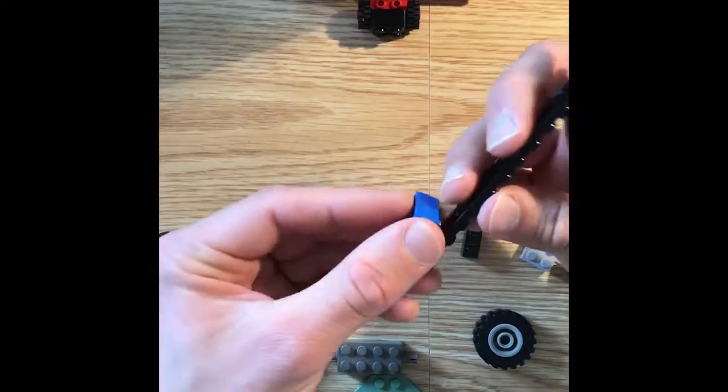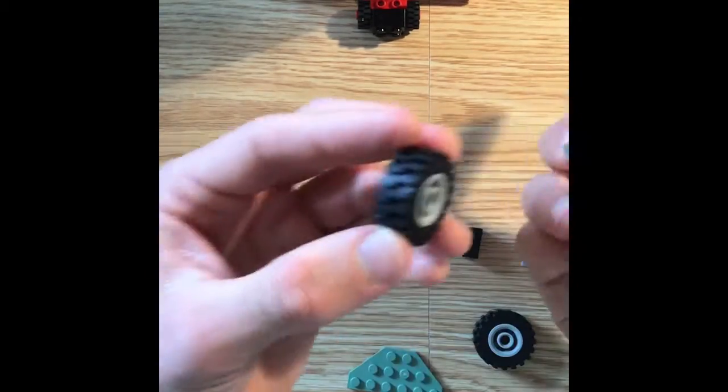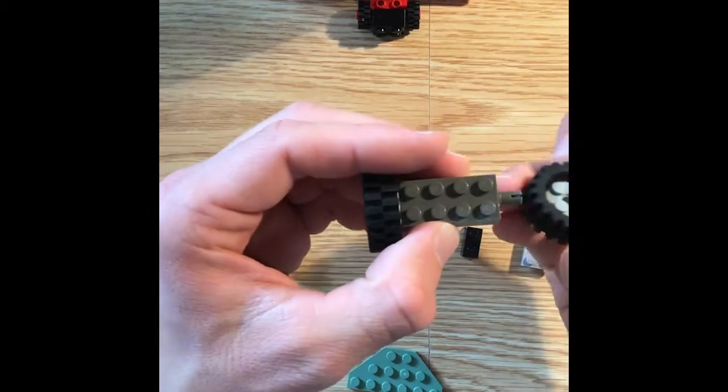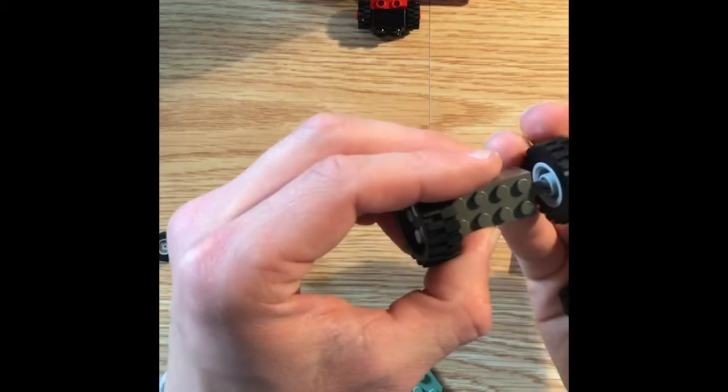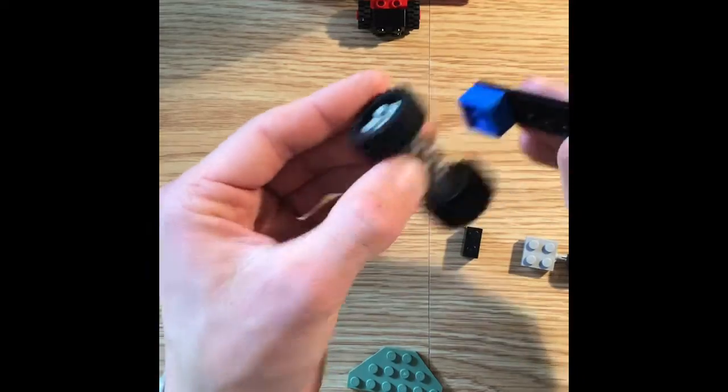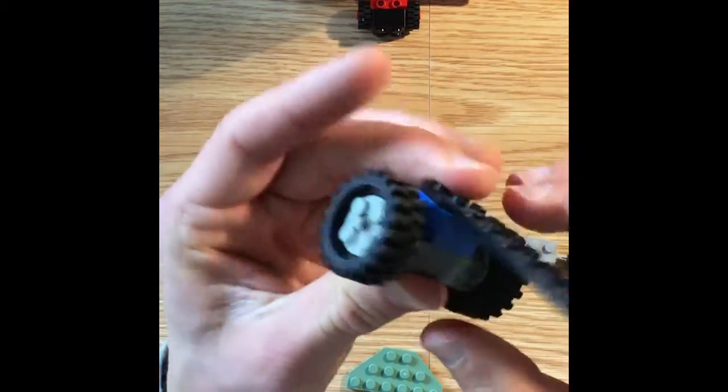First things first, we're going to take a brick and we want to put it on the back just above where the axle is going to be. So we'll build the rear axle and I'm doing mine with bigger wheels on the back and smaller wheels up front, kind of like a drag racer. You want to be sure that the space is there so that the wheels aren't hitting anything up above them.